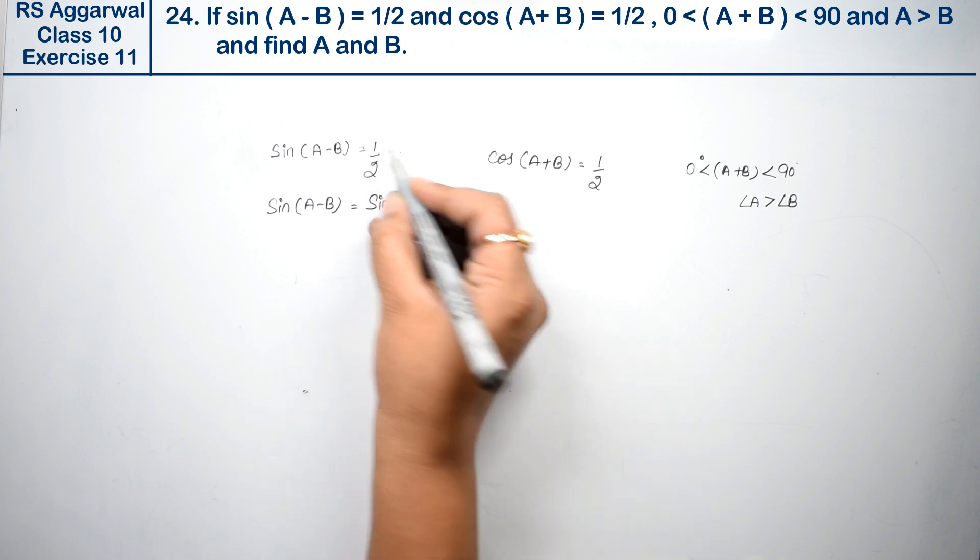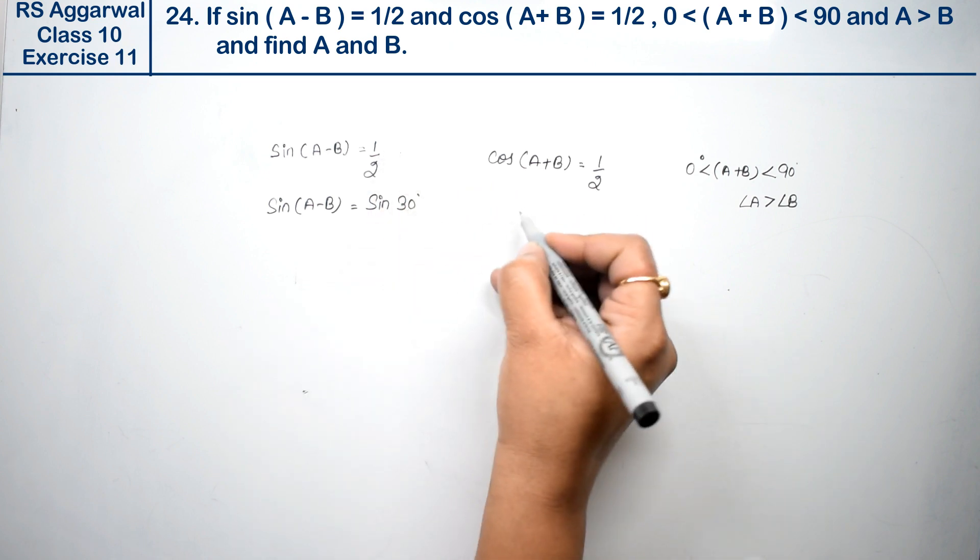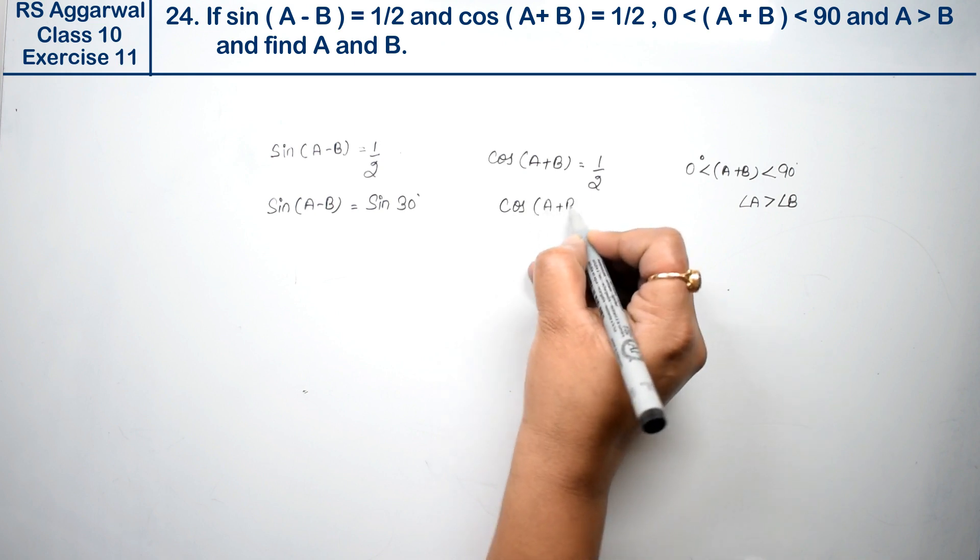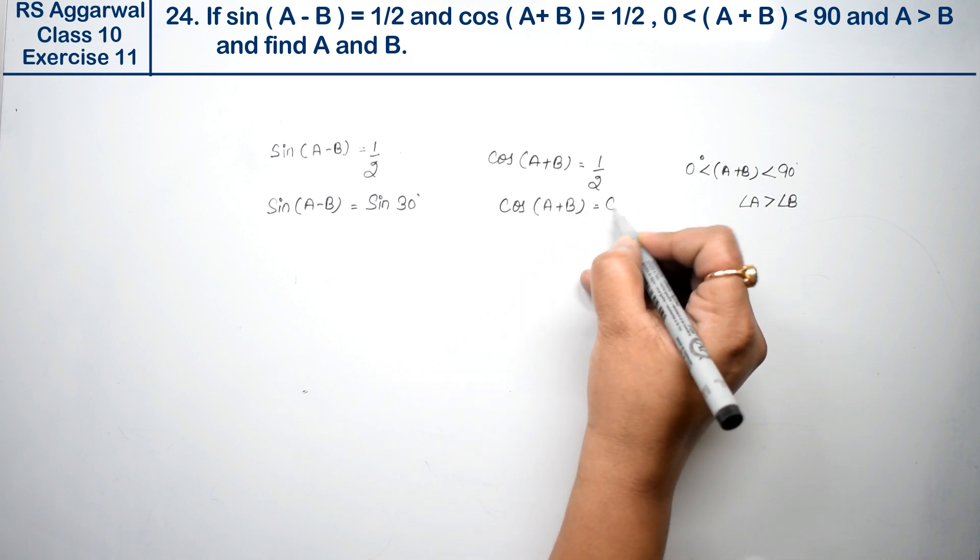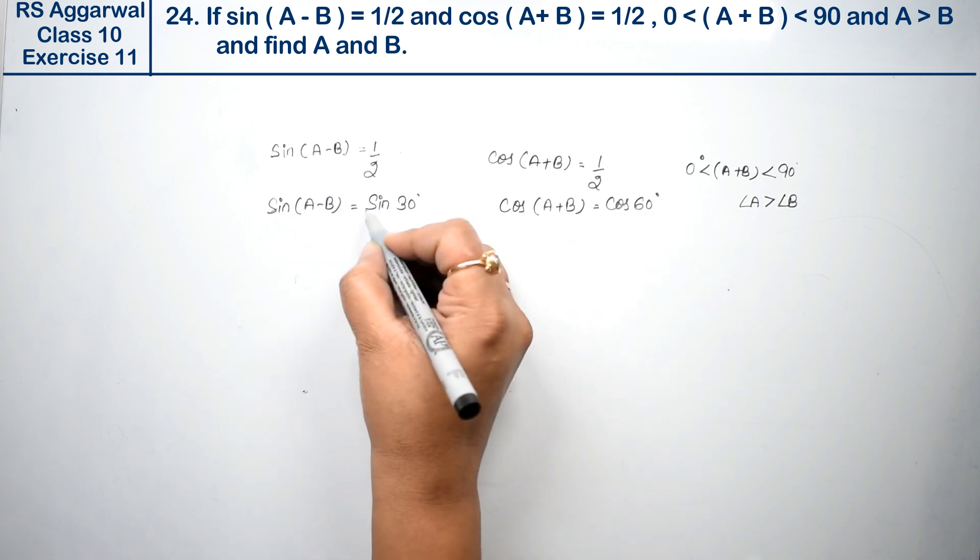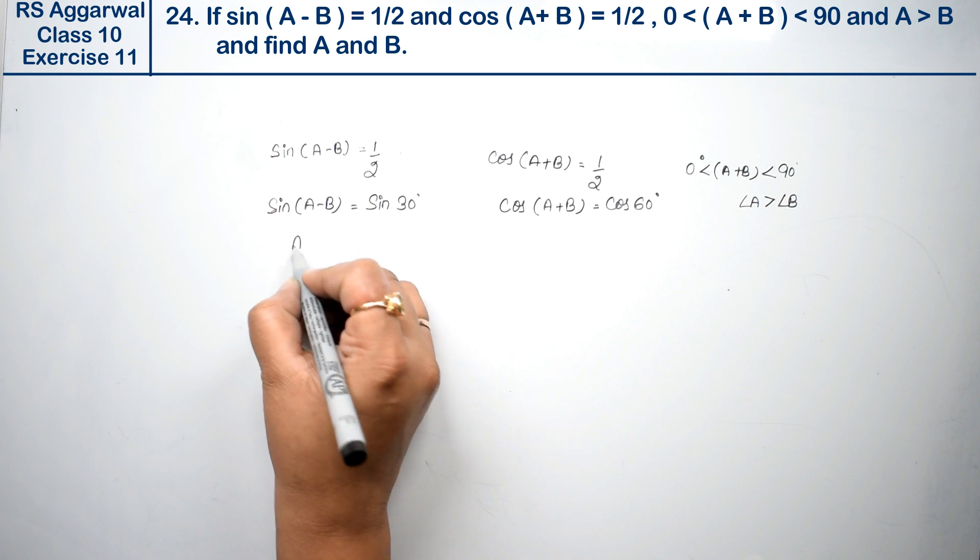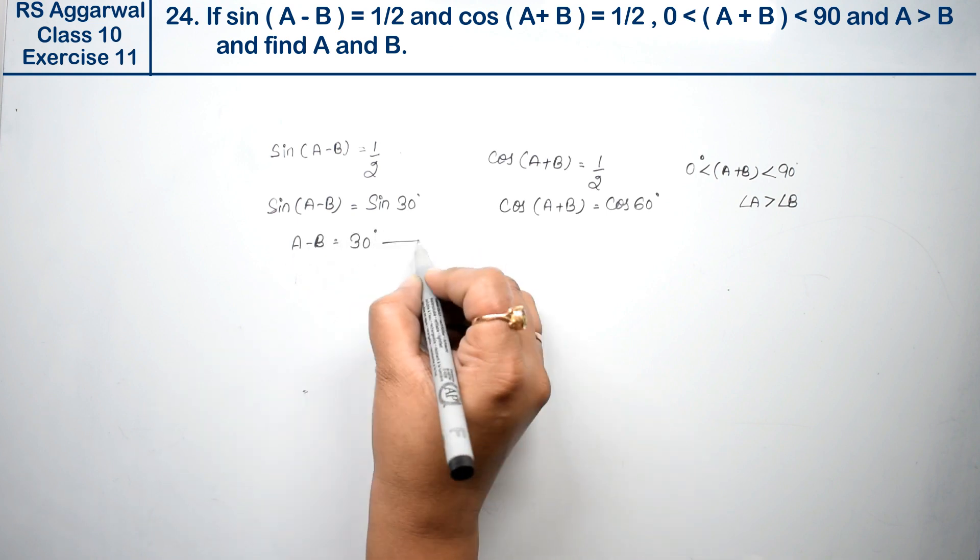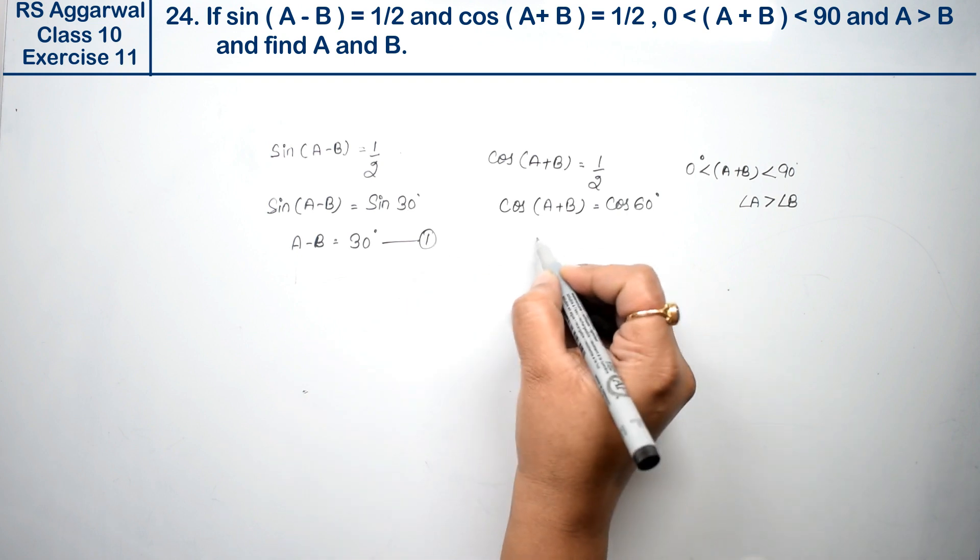Since half value for sine comes at 30 degrees. Similarly, for cos(A + B), half comes at cos 60 degree. When sine cancels here and cosine cancels there, A - B ki value is 30 degree, this is our first equation.